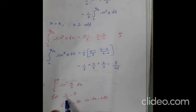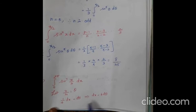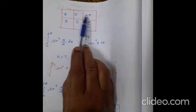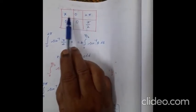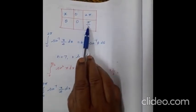Let x/4 = θ. Differentiating: 1/4 · dx = dθ, which implies dx = 4 dθ. Now change the limit. In terms of x, the limit is 0 to 2π. If x = 0, then θ = 0. If x = 2π, then θ = 2π/4 = π/2. So the new limit in terms of θ is 0 to π/2.